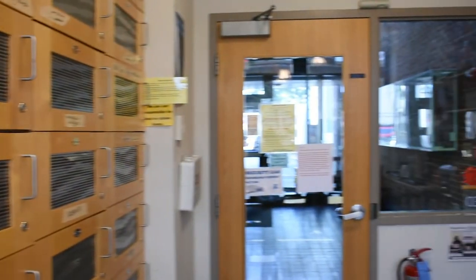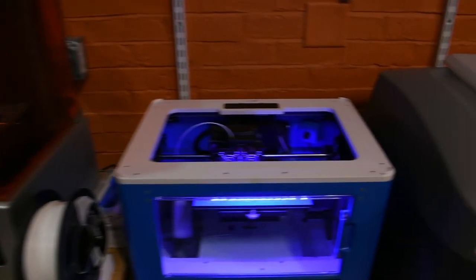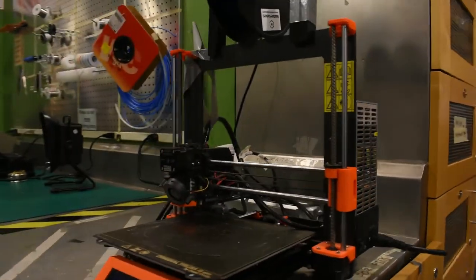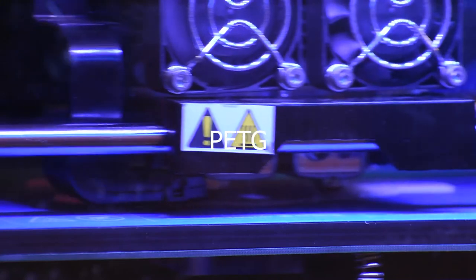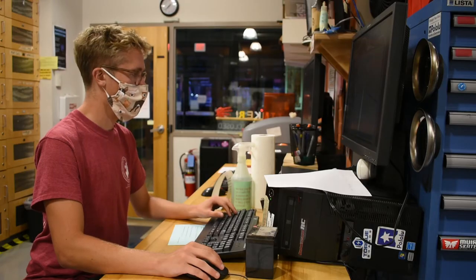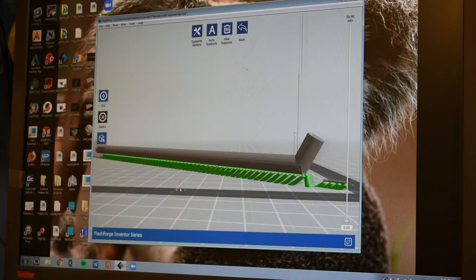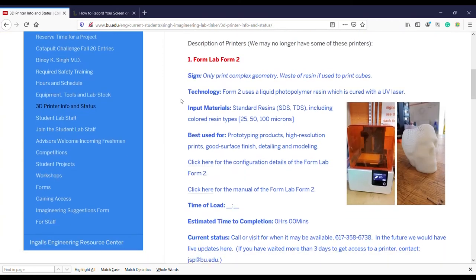We currently have five 3D printers in the lab, including a Form 2 by Formlabs, Flashforge Inventor, Ultimaker 3, and Mojo by Stratasys. Printers can take different materials, including PLA, ABS plastic, PETG, resin, and many others. To use a printer, upload your design to the computer. If you're not sure where to start, ask a lab advisor for help. More information about 3D printers can be found on the Tinker website.